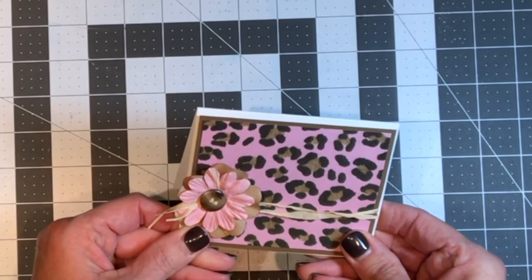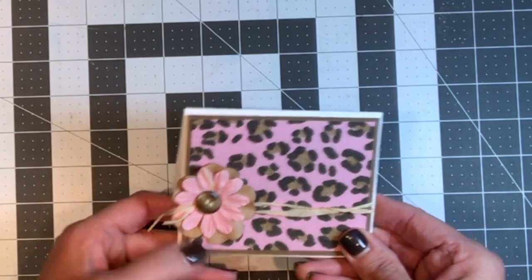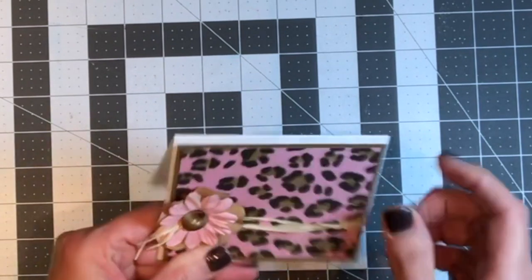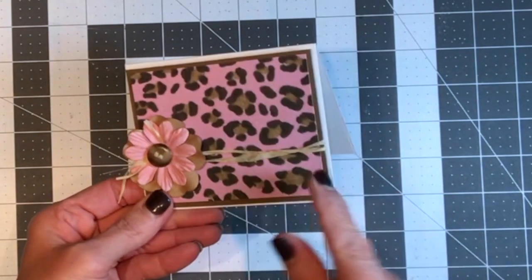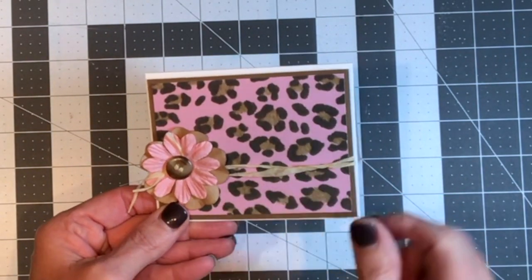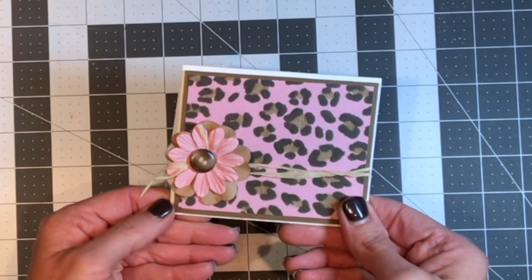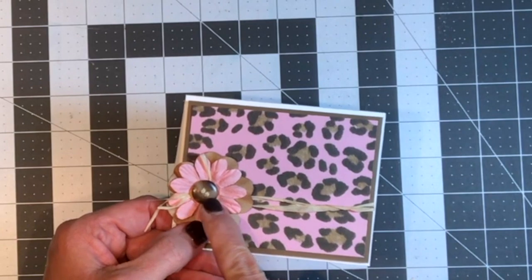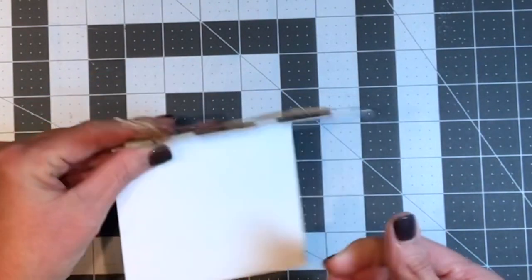I also had this cute patterned paper. It's an animal print. I matted it with some brown paper, put it on a card base, and then just tied some raffia ribbon around it before I attached it to the card base. I found some flowers. I used a button for the center of the flower. I even put some raffia into the center of the button.